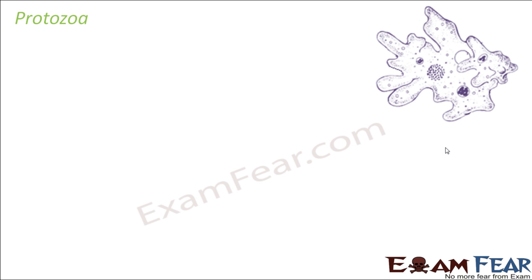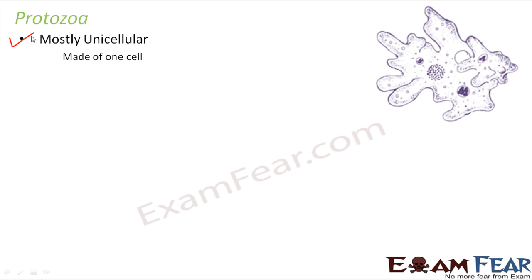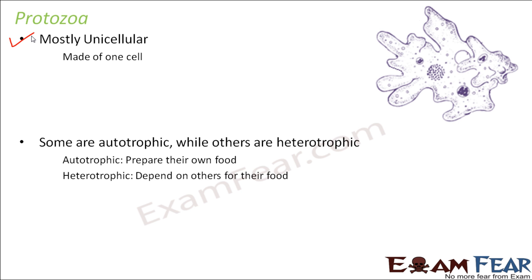The third classification is protozoa. Protozoa are organisms which are mostly unicellular, though some of them might be multicellular as well. Being unicellular means they are made up of one cell, and that one cell will perform all the functions in the organism.